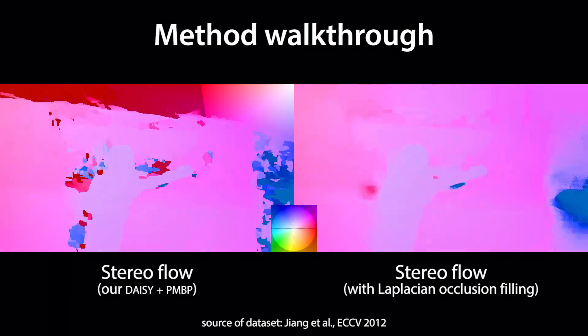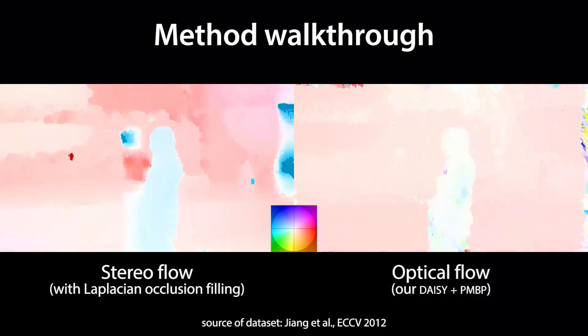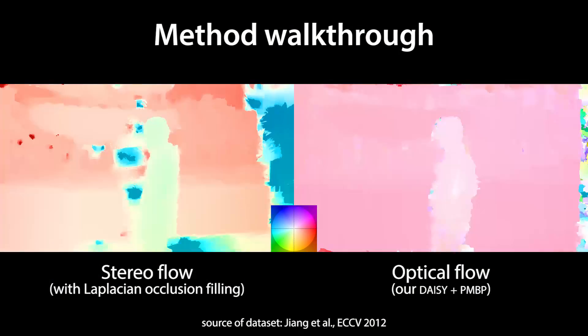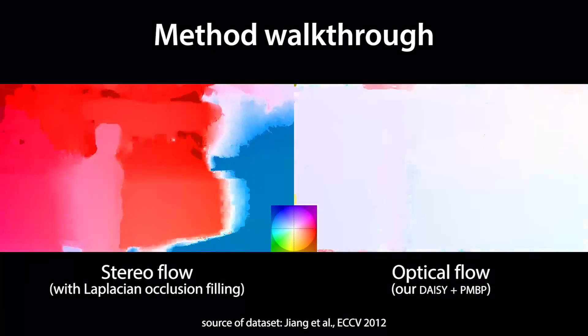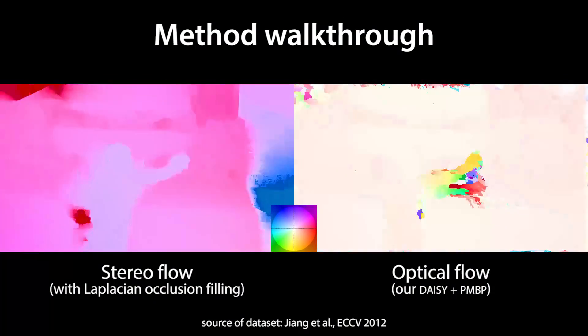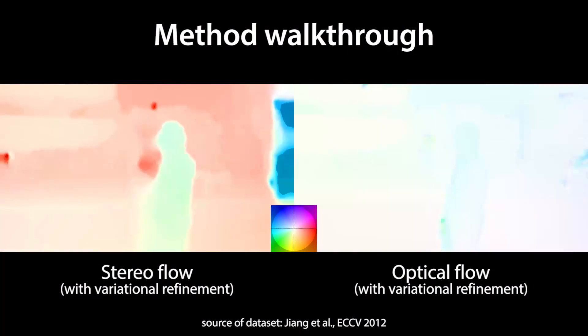The resulting stereo flow and the optical flow computed earlier are then used as initialization for a variational scene flow formulation that refines stereo and optical flows and produces our final correspondences.